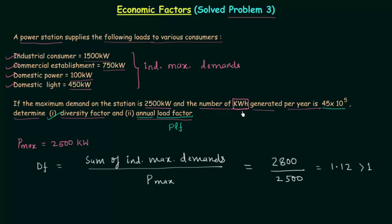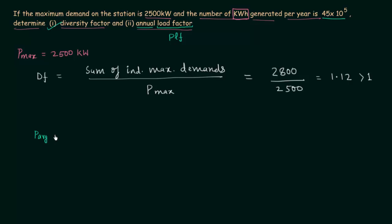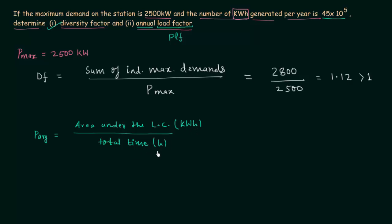To understand kilowatt hours: the average power equals the area under the load curve divided by total time. The area under the load curve has units of kilowatt hours and total time has units of hours. So kilowatt hours represent the area under the load curve, or the actual energy produced. The energy generated per year is 45 into 10 raised to power 5 kilowatt hours.